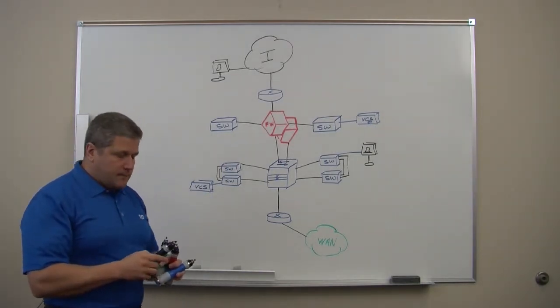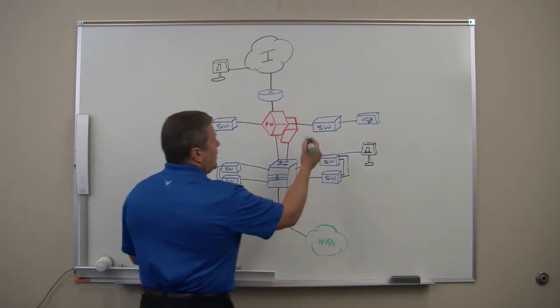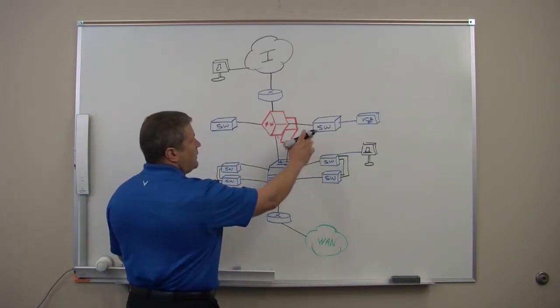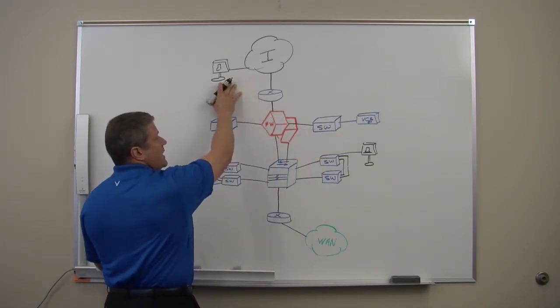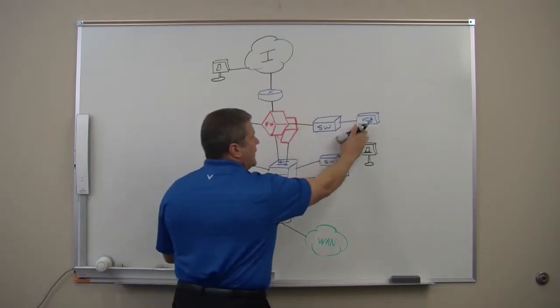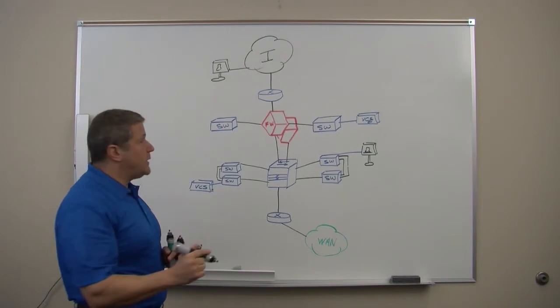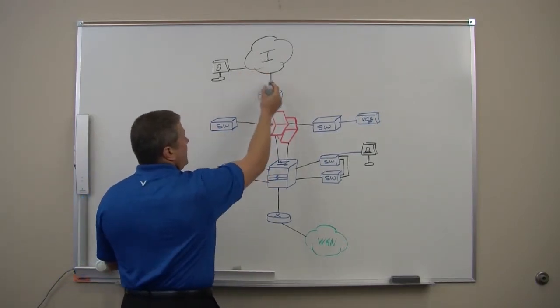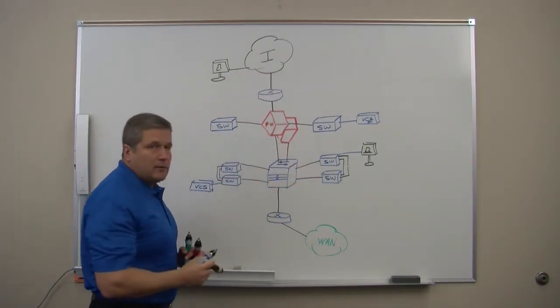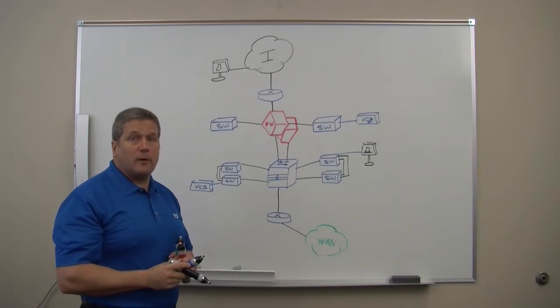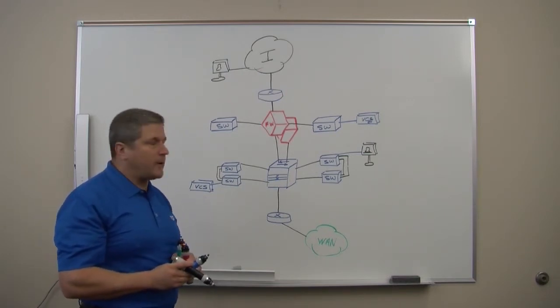Once this is accomplished, the firewall is basically configured to only allow communication from the outside of the network for video into the VCS expressway. Now there is no need to have those video ports open all the way to the inside of your network, whereby allowing you to have a tighter level of security at your perimeter.